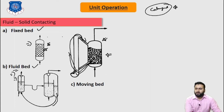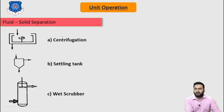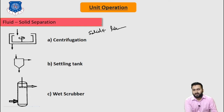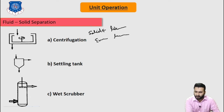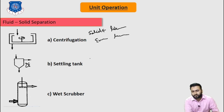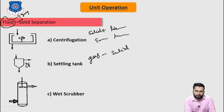Now let's discuss about fluid-solid separation such as centrifugation. Centrifugation is mostly used to separate very finely divided solid from liquid, or liquid from an emulsion. It is used for solid separation from liquid, and also used to separate out emulsion from the liquid solution. Then the settling tank — this is the symbol of a settling tank, which is a simple device used to remove large particles from a gas stream by simple settling in a low viscosity zone. It is used for the separation of gas and solid.